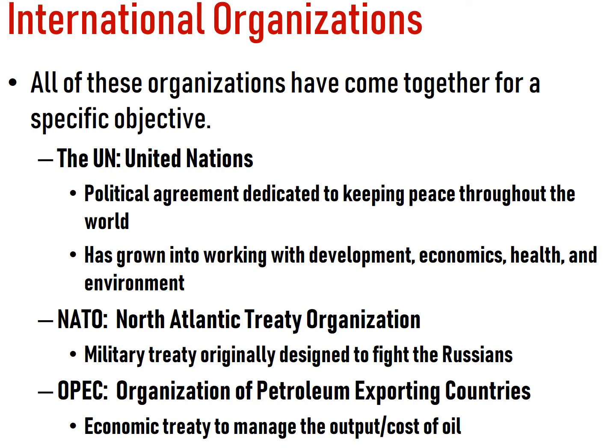The UN is the political part of SPEED — it's a political agreement between countries to keep peace throughout the world. That is their main objective, though they've grown into economics, health, environment, and development. NATO, on the other hand, is a military treaty originally created during the Cold War, now a military agreement where countries defend each other. OPEC is the economic part of SPEED — the Organization of Petroleum Exporting Countries — an economic organization where they agree on oil prices to benefit those countries as much as possible. There are other examples across all of SPEED: social, economic, environmental international organizations.